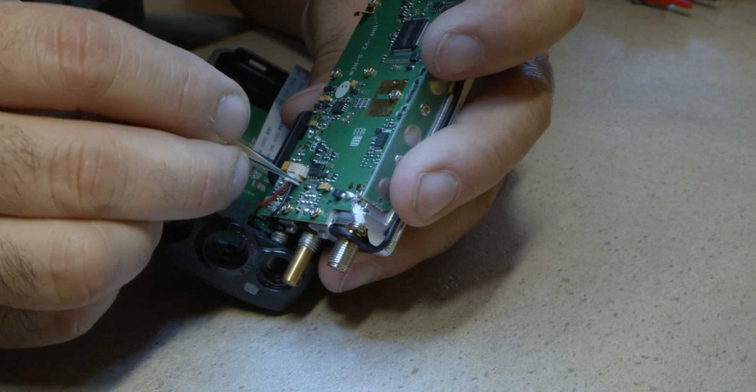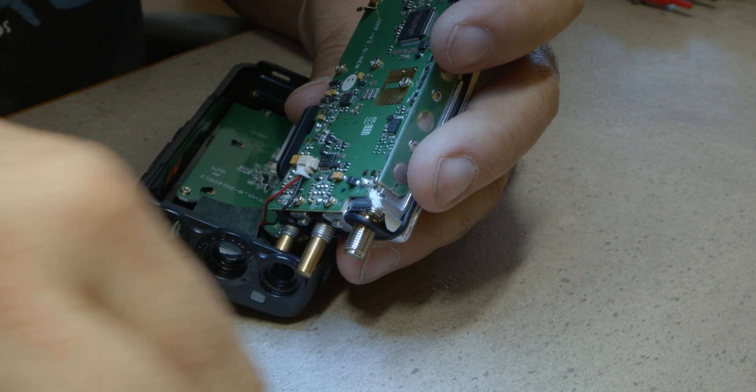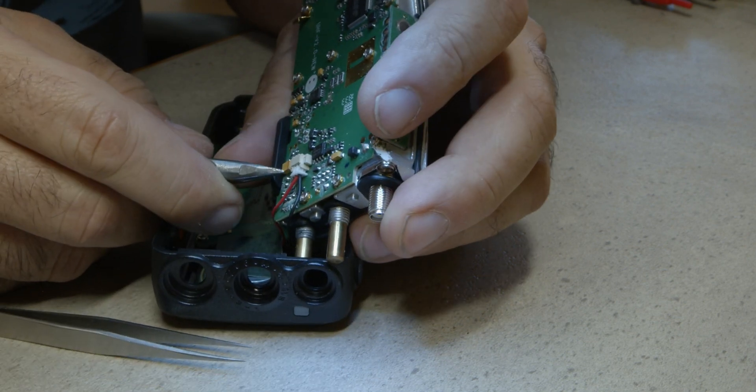Now that the ribbon cable is released, you can pull the speaker connector out to fully separate the case and the heat sink.